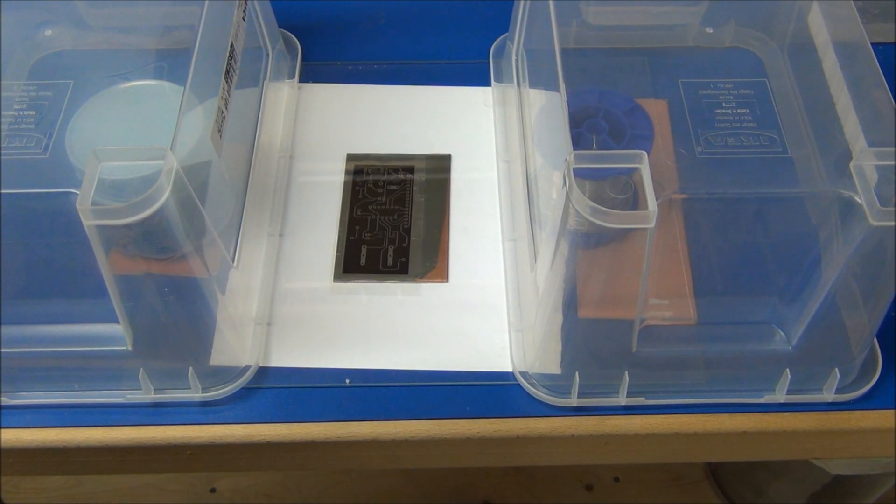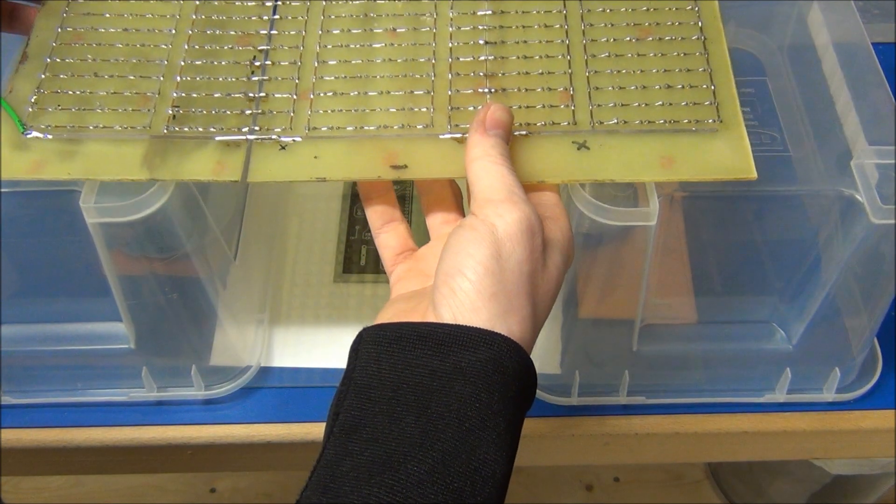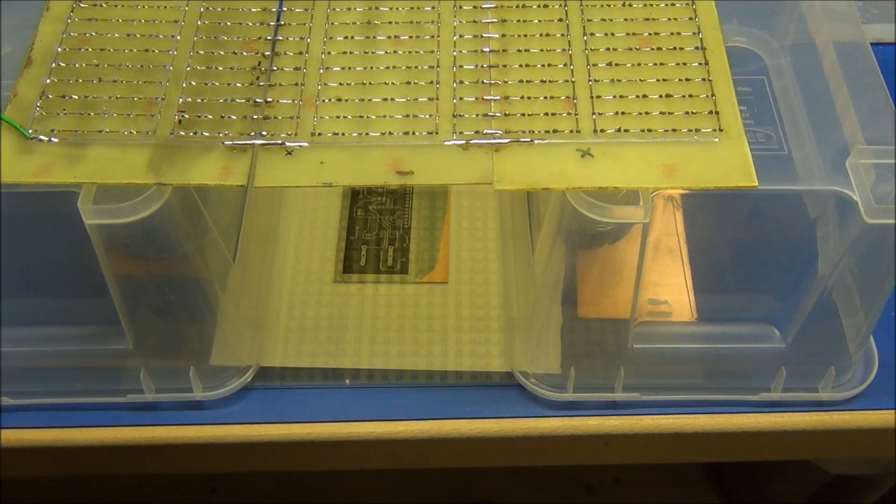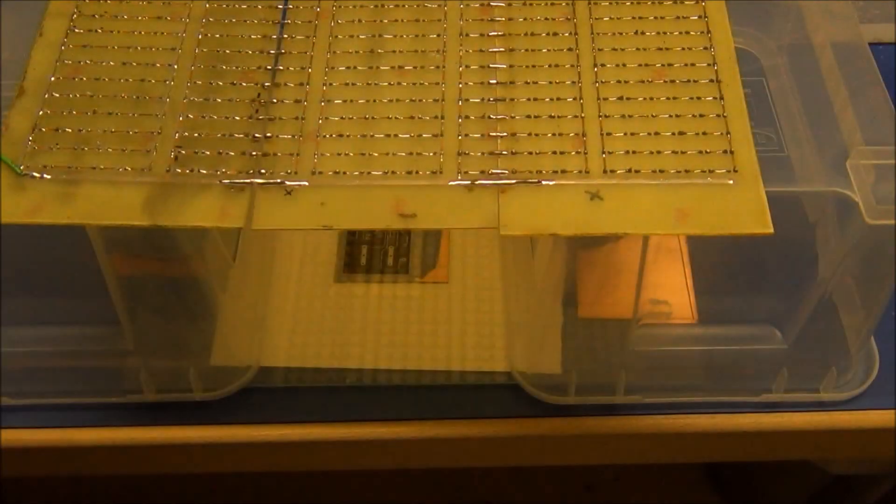Place your circuit design on top of the photoresist. Put a piece of glass on top and put some weight on it. And now place your UV lamp on top. And now expose your board to UV light. If you use an LED array like this, you will need about two and a half minutes.